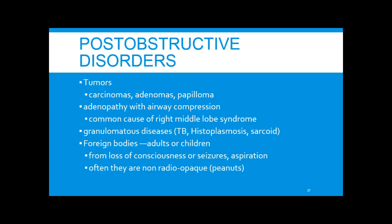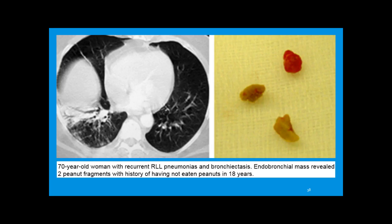Anything that causes airway obstruction can lead to bronchiectasis — tumors, benign or slow-growing, carcinomas, adenomas, papillomas, adenopathy — basically any narrowing creates a nidus for infection. Foreign bodies in adults and children are another cause. A case example is a 70-year-old woman with recurrent right lower lobe pneumonia who on bronchoscopy was found to have peanut particles as the obstructing mass — showing the destruction that can happen from a foreign body and recurrent pneumonia.